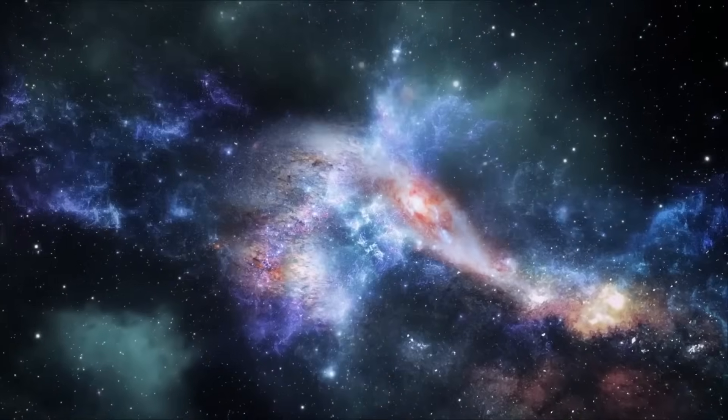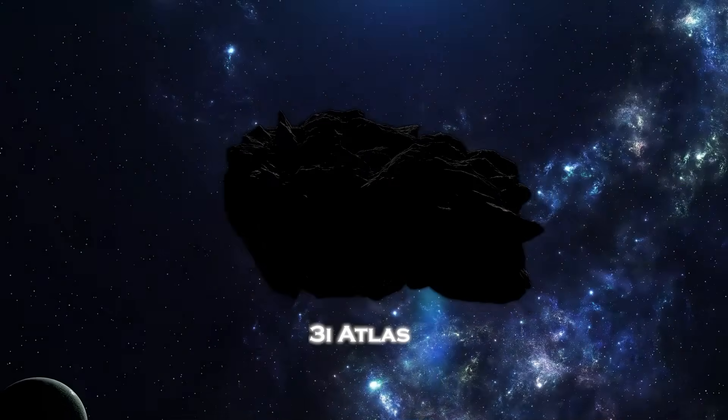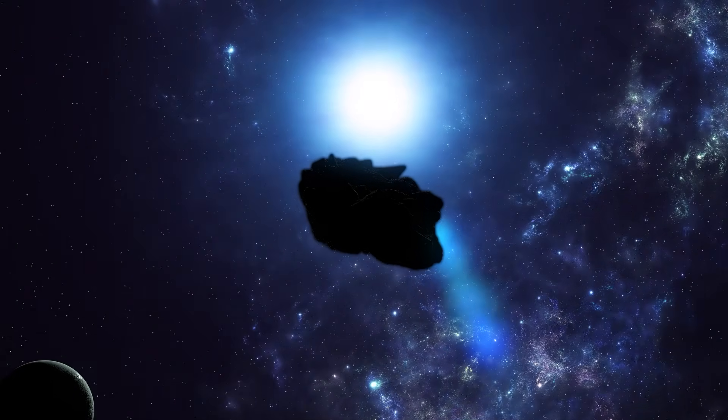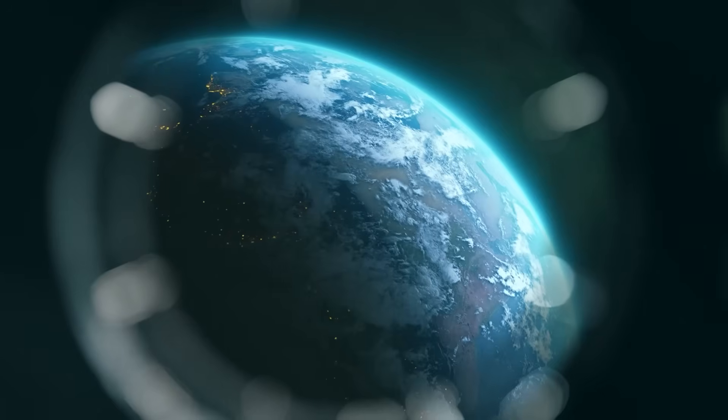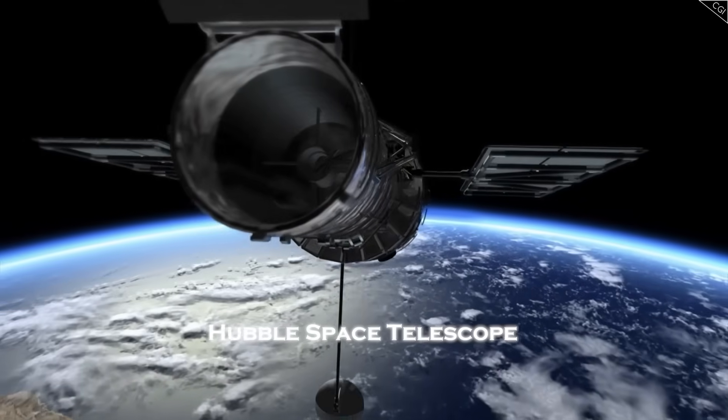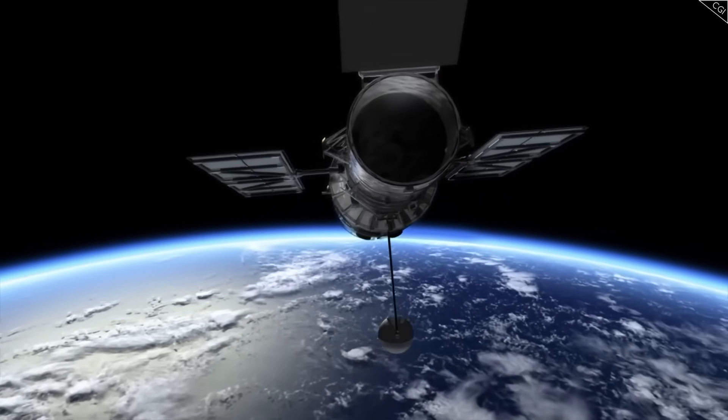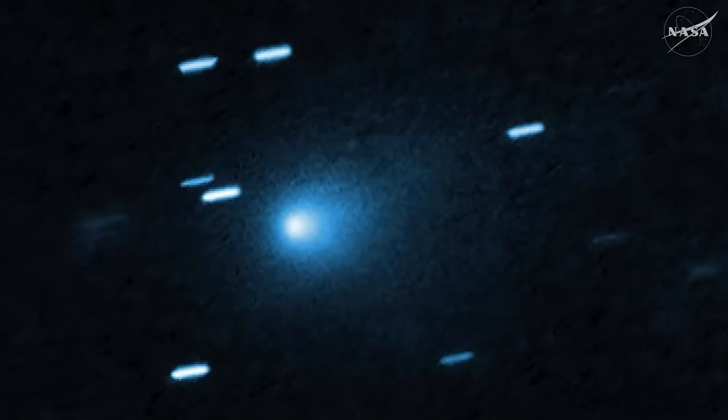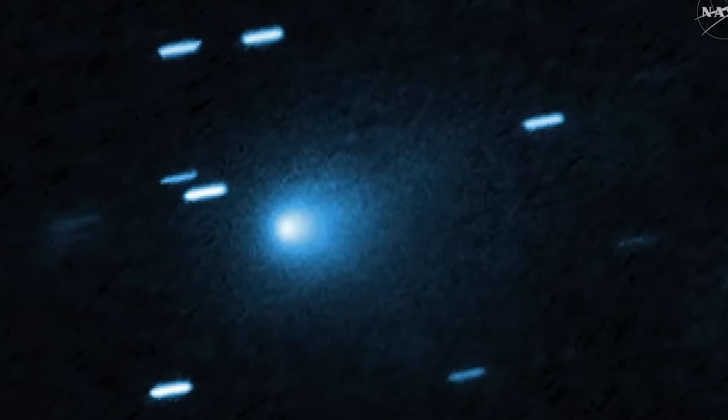As the video begins, 3i Atlas is just 18 days away from reaching the closest point to Earth that we will see during its entire observation arc, coming in more than twice as close as it was when the Hubble Space Telescope produced the now iconic image that ignited global fascination. But unlike typical comets moving away from the sun after perihelion, 3i Atlas isn't dimming in the way it should.